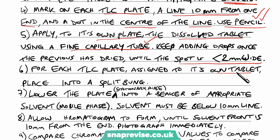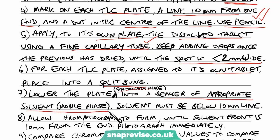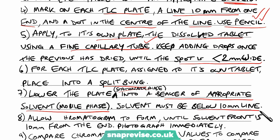For each TLC plate assigned to its own tablet, we need to place them into the split bung and then lower the plate — which is the stationary phase — into a beaker of the appropriate solvent, which will act as the mobile phase. As long as you acknowledge that you need to dip the stationary phase into a mobile phase, that's the main process of chromatography. The solvent must be below the 10mm line; if it was above, the pigments may spread downwards as well as upwards, which would affect the distances and therefore affect our results.